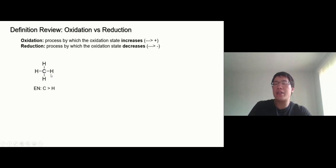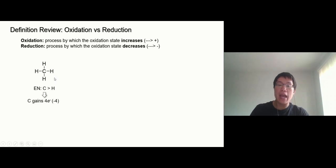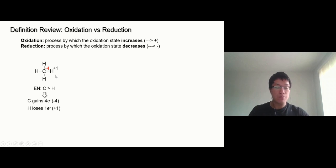Here's how we calculate the oxidation state of carbon and hydrogen — we can call it oxidation number, people understand. We compare the electronegativity of the atoms in the molecule. Carbon and hydrogen: the electronegativity of carbon is higher than hydrogen, so we treat carbon as if it beats hydrogen for the electrons. Carbon gains four electrons from four hydrogen atoms — one each — so this carbon gets negative four. Each hydrogen loses one electron, so becomes positive one.